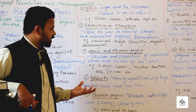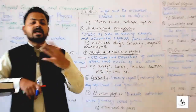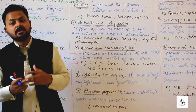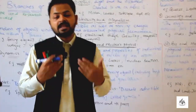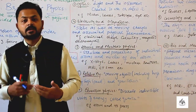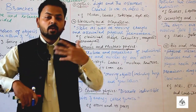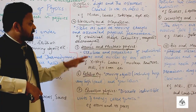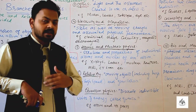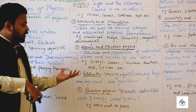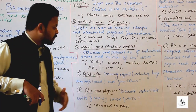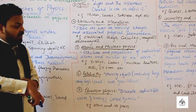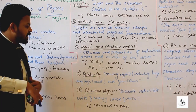The fifth branch is atomic and nuclear physics, which is a detailed study of the atom — its central part called the nucleus — the properties of the nucleus, the size of the atom, its constituent particles, shape, and energy. Applications include X-rays, lasers, nuclear reactors, MRI, and CT scans.